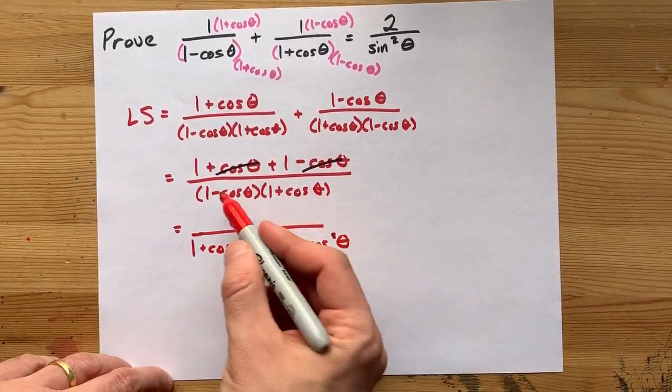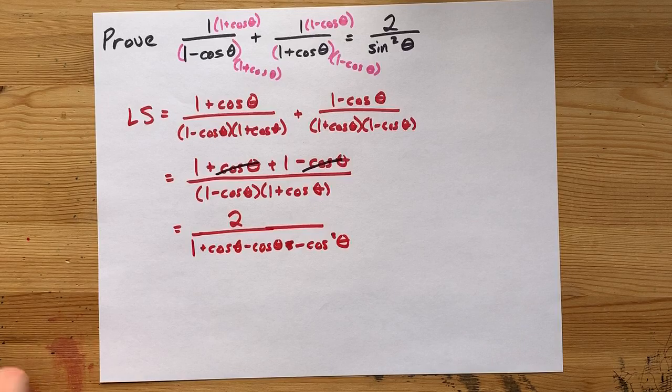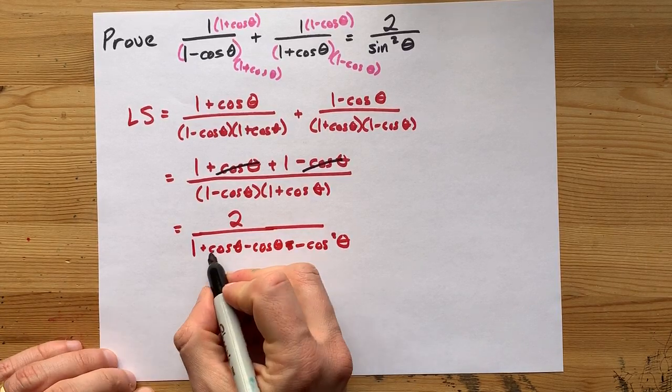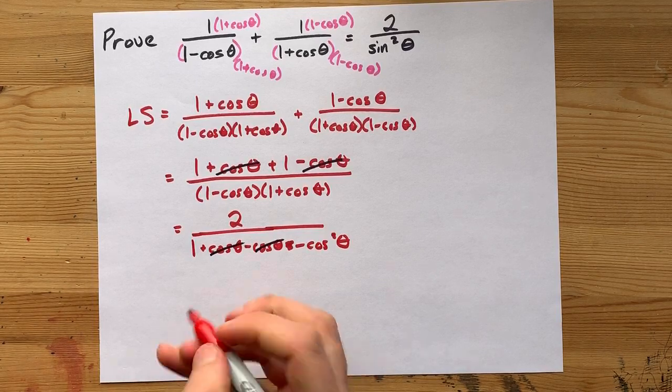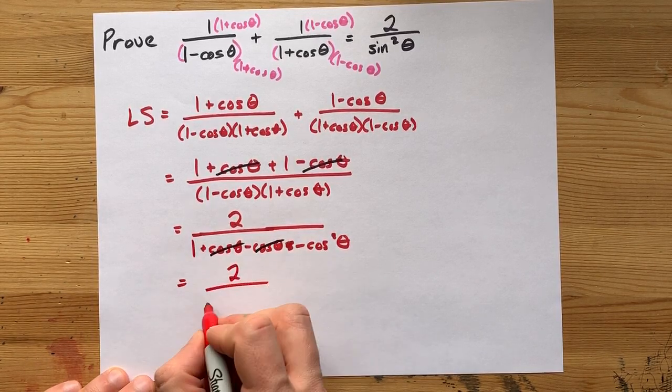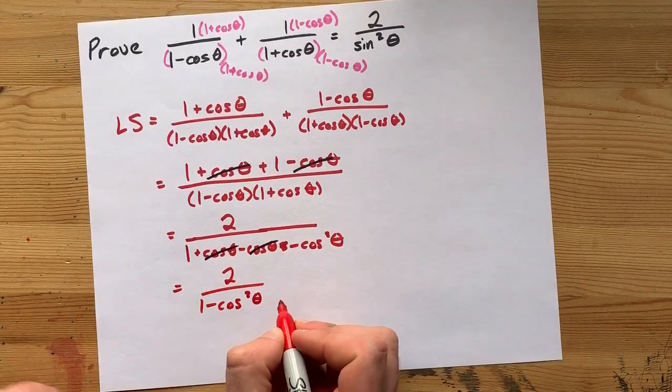Now, you might have already seen that that's a difference of squares. That's why the plus cos and minus cos middle terms cancel out. So we end up with 2 over 1 minus cos squared theta.